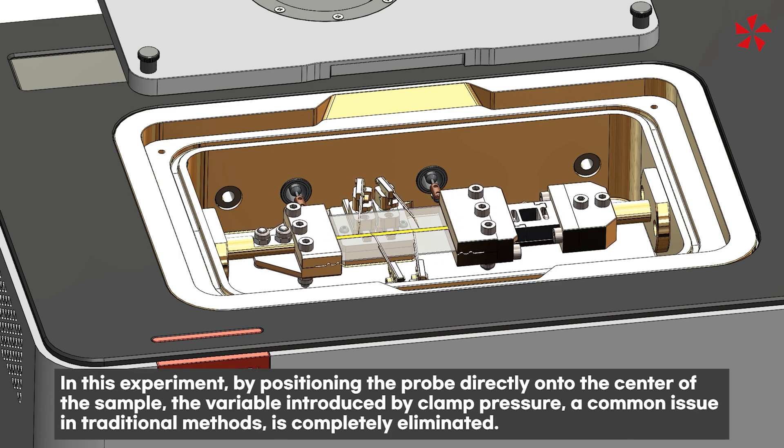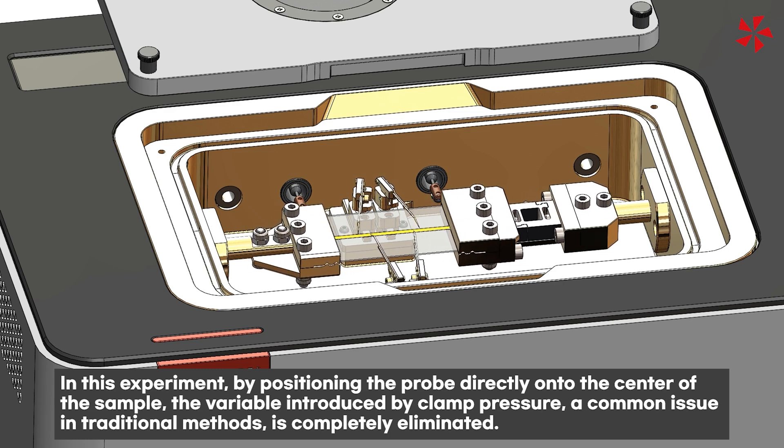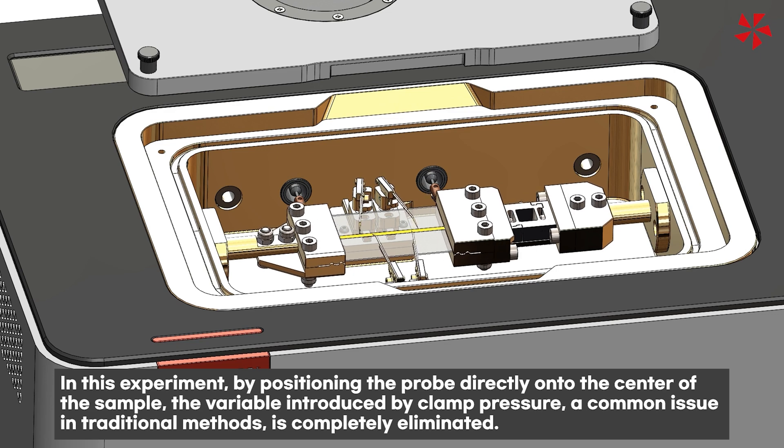In this experiment, by positioning the probe directly onto the center of the sample, the variable introduced by clamp pressure, a common issue in traditional methods, is completely eliminated.